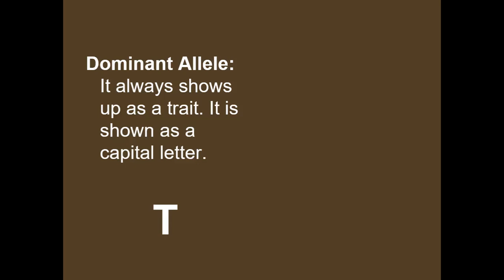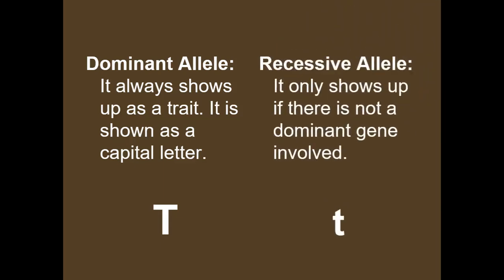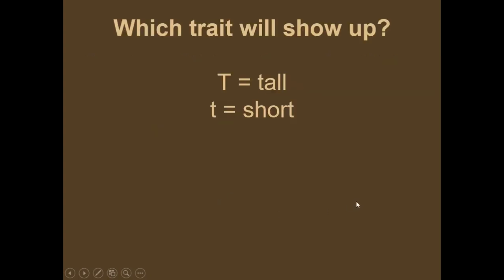A dominant allele always shows up as a trait in a monohybrid cross — we'll only be talking about crosses with one allele from each parent. When an allele is dominant, we show it as a capital letter. Recessive alleles will only show up if there is no dominant allele involved — those are represented with a lowercase letter. To have a recessive trait show, you'd need two of them, like two little t's. If a big T showed up, the dominant trait would appear.